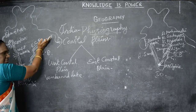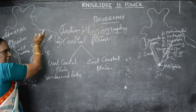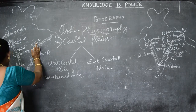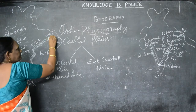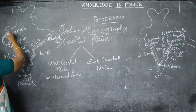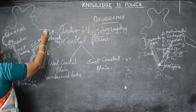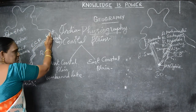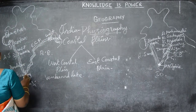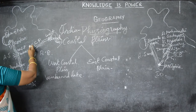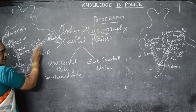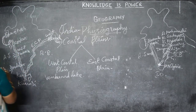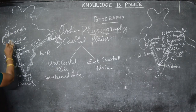The East Coastal Plain starts from West Bengal and extends to Kanyakumari, near the Bay of Bengal. The states covered by the East Coastal Plain are West Bengal, Odisha, Andhra Pradesh, and Tamil Nadu. The West Coastal Plain covers the states of Gujarat, Maharashtra, Karnataka, and Kerala.